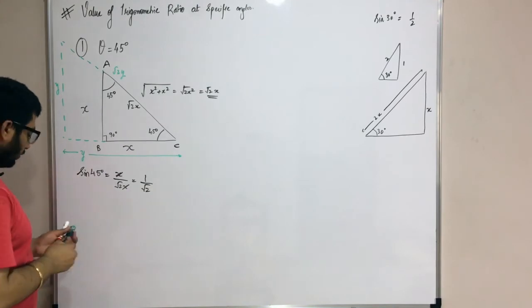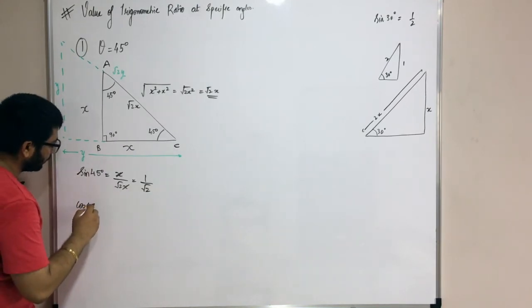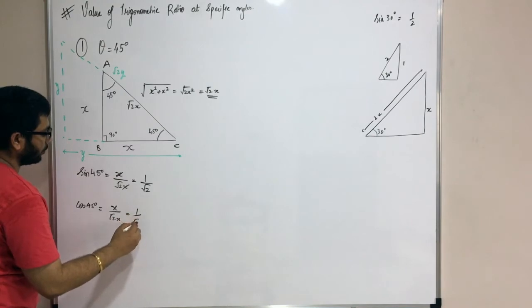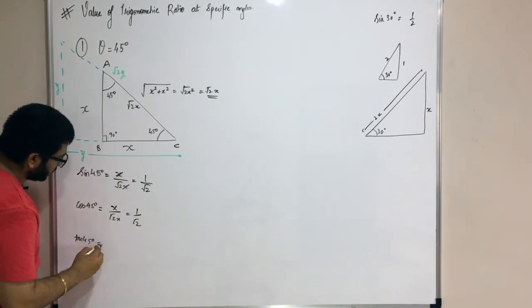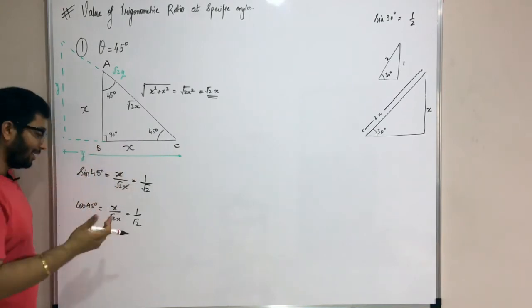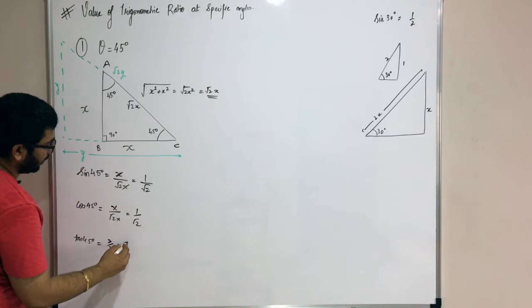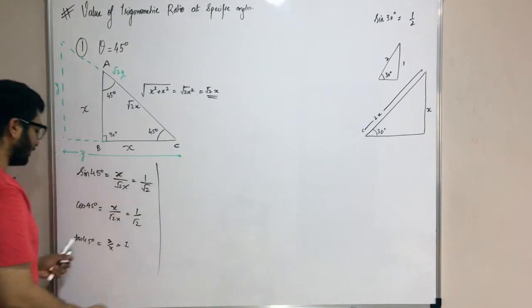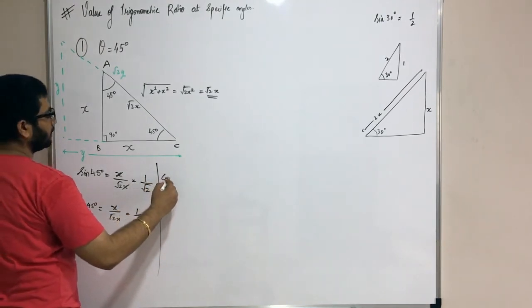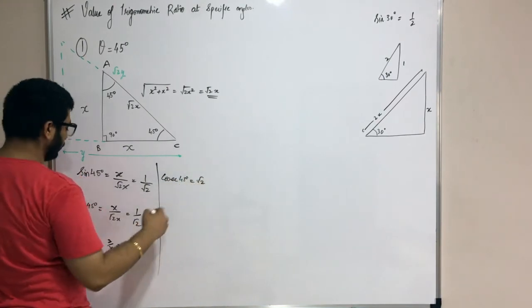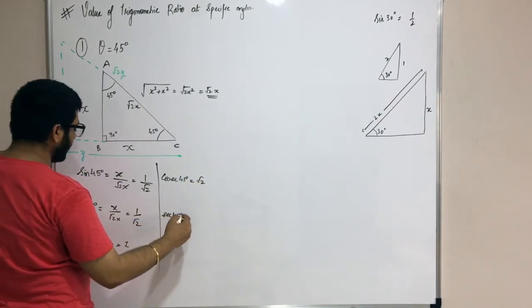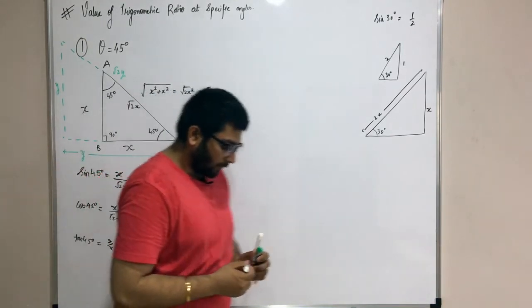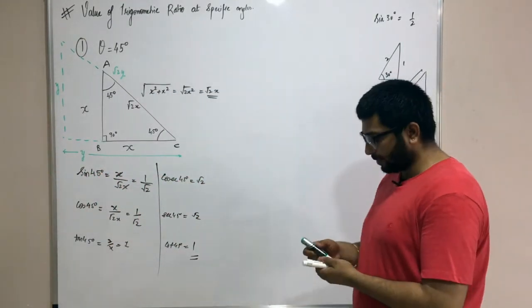Now let's find the value of cos 45 degrees. Cos of 45 degrees is adjacent by hypotenuse, so this also becomes x by root 2x, which gives one by root two. Tan 45 is opposite by adjacent, or sine by cos, which gives x by x equals one. Once you have sine, cos, and tan, the other three are reciprocals. Cosec of 45 degrees is root 2, sec of 45 degrees is root 2, and cot of 45 degrees is one.